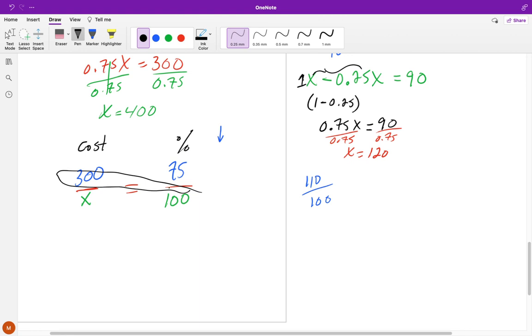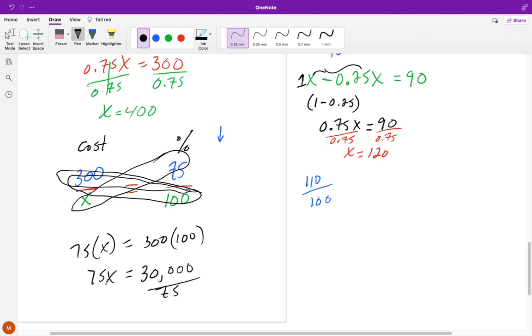And as we talked about, we can then cross multiply. So we do our one numerator multiply with the other denominator and the other numerator with the other denominator. So it's 75 times X is then equal to 300 times 100. And 75 times X is 75X, and 300 times 100 is 30,000. And when we divide each side by 75, X is then equal to 400. So you see, no matter which method I choose, we're going to get the same answer.